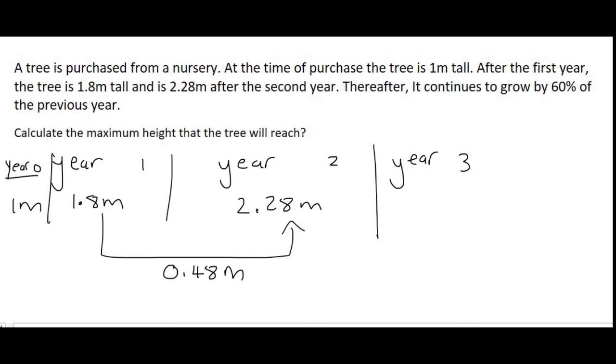So going into year 3, it will grow by 60% of that amount. So its new height will be 2.28 plus 60%, which is the same as 0.6, times the previous year's growth, which is 0.48. That is how trees grow. They grow fast in the beginning, and then it becomes less and less each time. So the new height of the tree will be 2.568. Just to save time, we can actually stop right there. We don't have to go all the way to year 5.